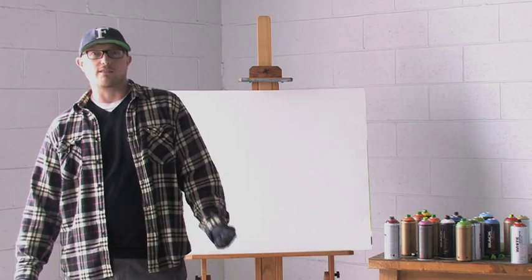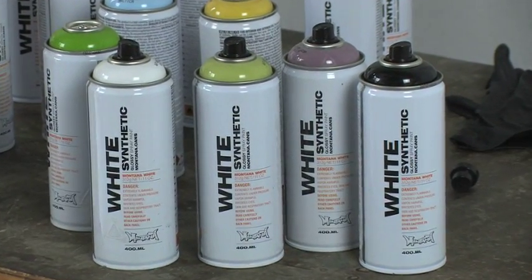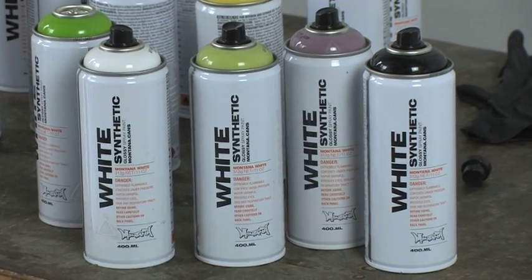The Montana white line is a value grade synthetic based paint. Its high pressure valve system makes it ideal for painting large surfaces and it dries slightly slower than the other Montana products.